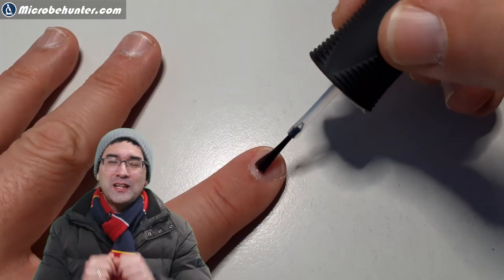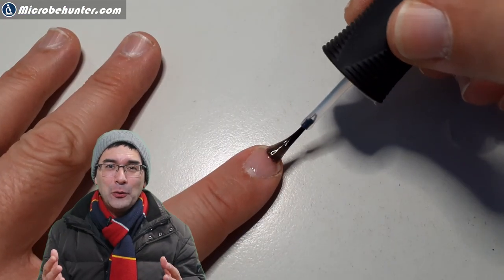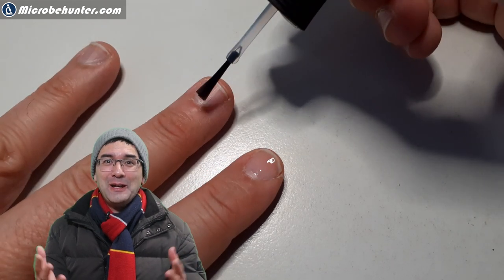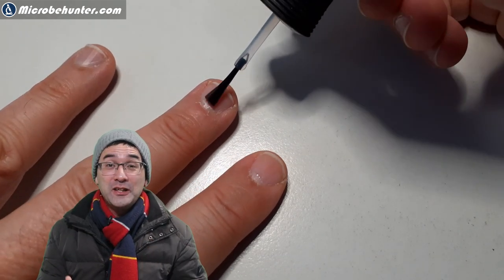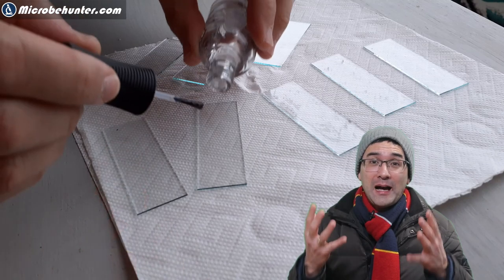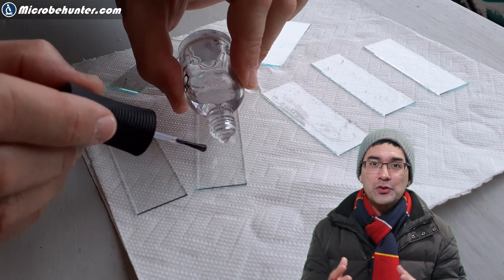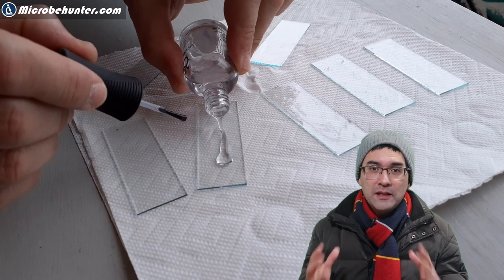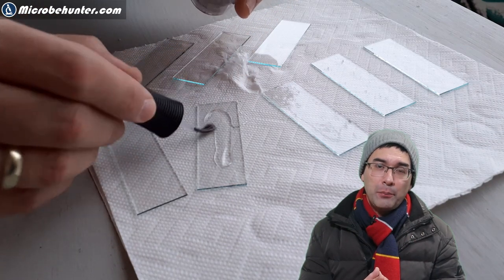The trick is nitrocellulose, also more commonly known as clear nail polish. I'm just showing you how it actually normally should be used, but I am using it today to actually cover a microscope slide, a glass slide with a thin layer of nail polish.